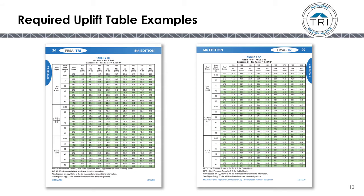Here is what the Table 2s look like. On page 26, you'll find Table 2HC, which is for hip roofs in Exposure C. Table 2GC is for gable roofs in Exposure C.